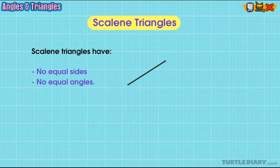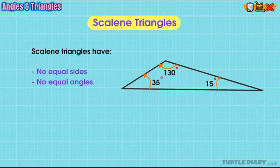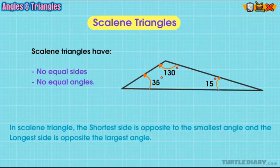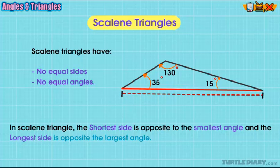All of the sides and angles of a scalene triangle are different. In scalene triangle, the shortest side is opposite to the smallest angle, and the longest side is opposite the largest angle.